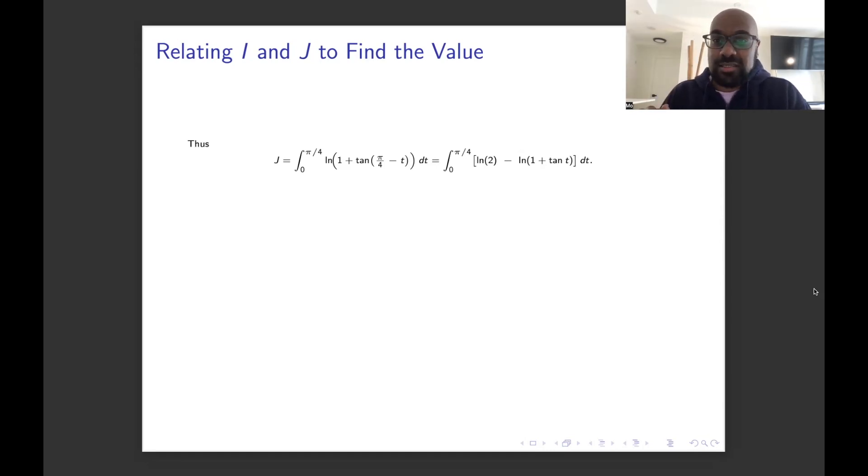Now this is fantastic because if we break this integral up, we get the integral from 0 to π/4 of ln(2), which is a constant dt. And then we're left with this integral right over here, but that is actually our original transformation of the integral i that we started with. So this integral here evaluates to this constant that we're integrating times the length of the interval we're integrating against, which is ln(2) times π/4. And then minus this integral, which was our transformed version of the original integral i.